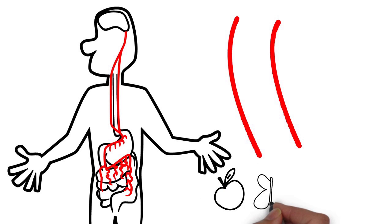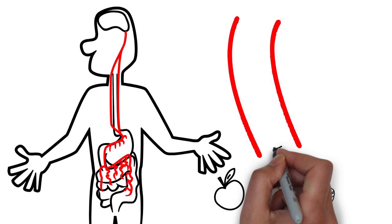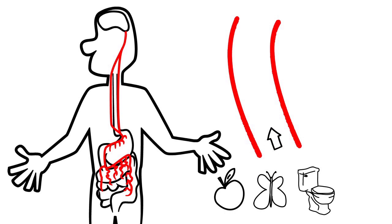When you get normal feelings of hunger, feeling full, butterflies, or the urge to go to the loo, these sensations are detected by the vagus nerve and relayed to your brain.